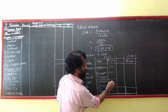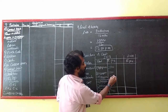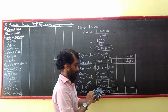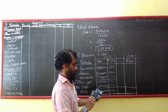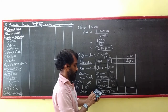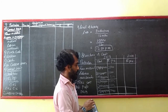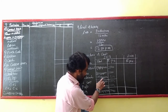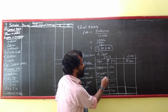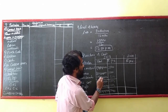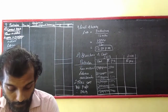So total cost per unit = 4,000. This is clear. Selling price is 5,000, total cost is 4,000, profit is 1,000 per unit.